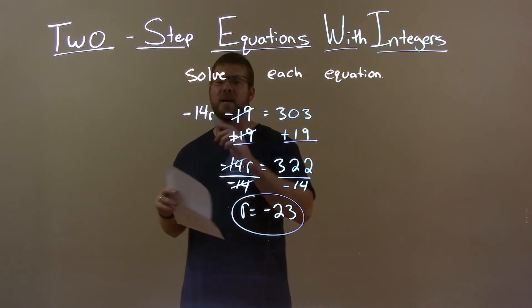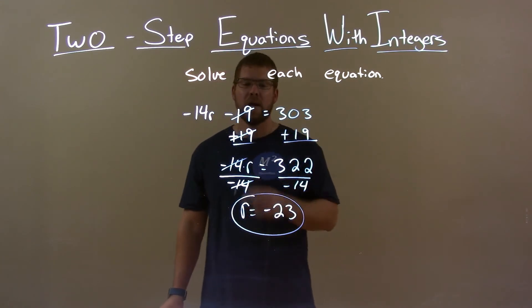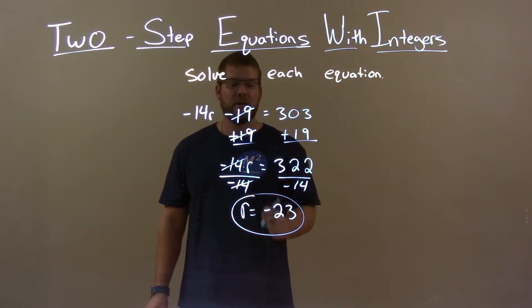Quick recap. We're given negative 14r minus 19 equals 303, and we want to solve for r. Add 19 to both sides, then divide by negative 14. That gives me r by itself equal to negative 23.